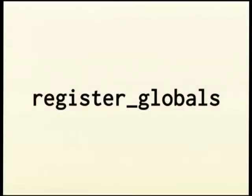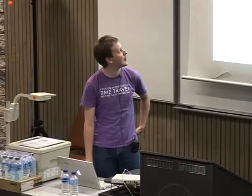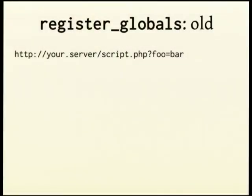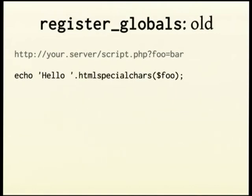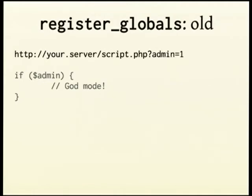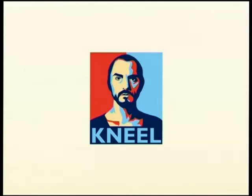The very first one we got rid of was Register Globals, which should have died about 10 years ago, but we did finally cut the cord. For those of you who have been brought up on newer versions of PHP and have no idea what I'm talking about — you lucky things — what this actually was: if you had a GET parameter like foo, you could actually just access it as the variable foo. As it turns out, this was a little bit of a problem because if you didn't initialize your variables first, somebody could send you a GET variable like that and then you're in all sorts of trouble. So the correct way of doing it, we added some super globals called GET, POST, and REQUEST, and you should be accessing it through them.